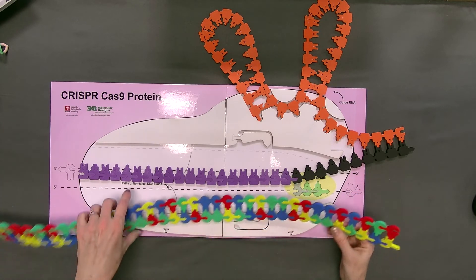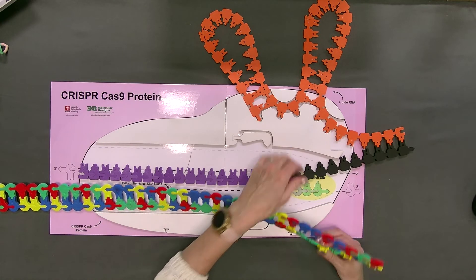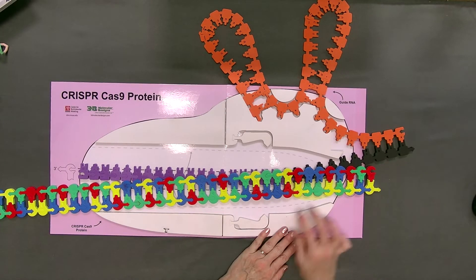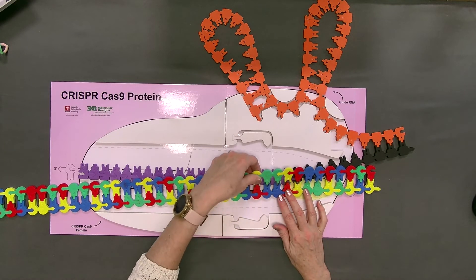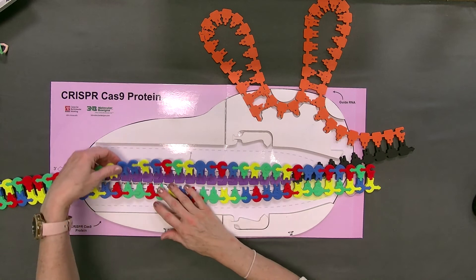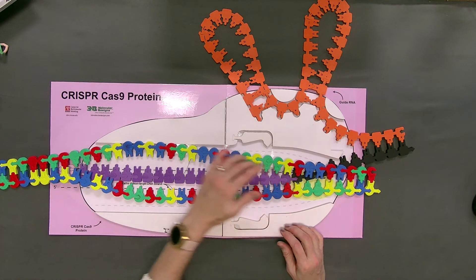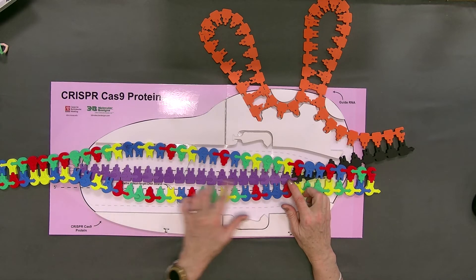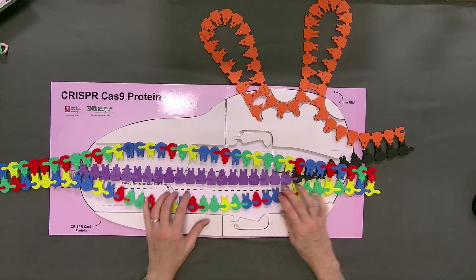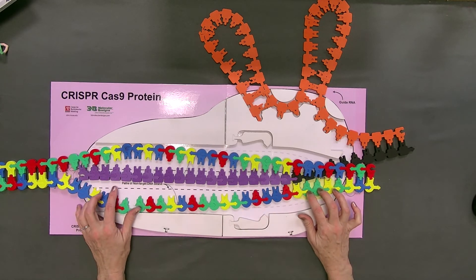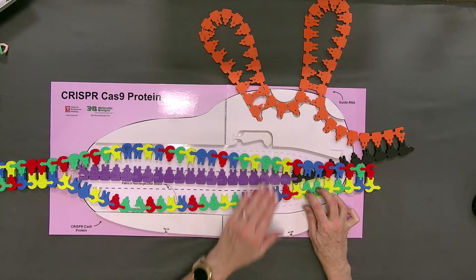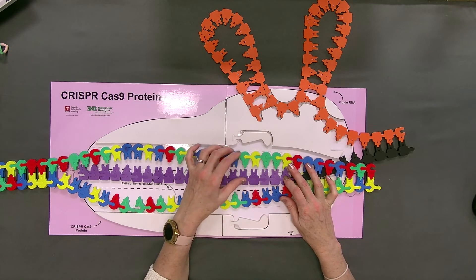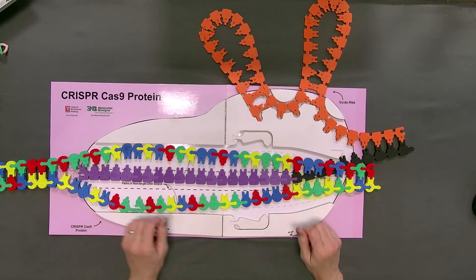When it does, it's going to bind to a site in the Cas9 protein called the PAM recognition site. So Cas9 is going to bind that NGG, and we'll talk about how it does that later. But once it binds those Gs, it's going to open up, melt these pieces of DNA apart into what we call the target strand and the non-target strand. The target strand is the one that's going to be interrogated by the guide RNA. The non-target is just kind of moved out of the way. So you'll see that the NGG is actually on the non-target strand, and the other side is going to be interrogated. Let's take a look. Let's see if this works. Nope. It doesn't look like it's going to work. It doesn't fit.